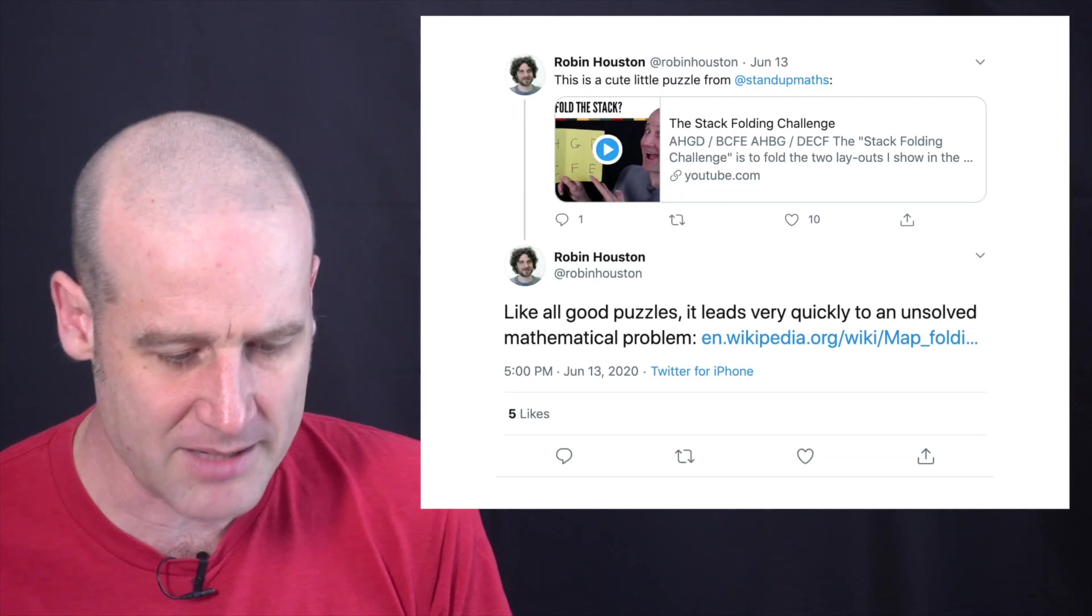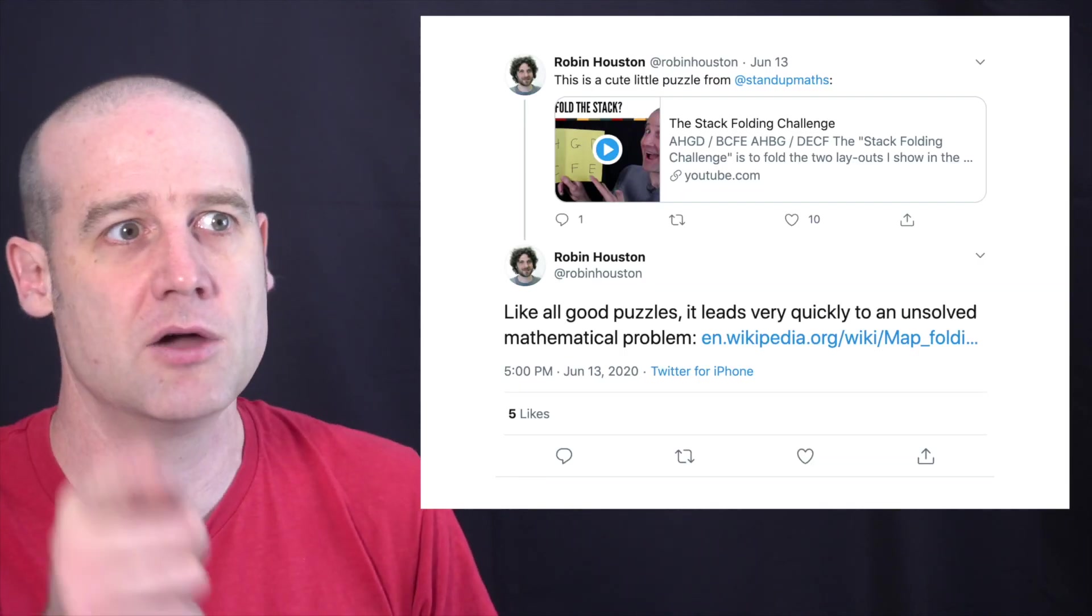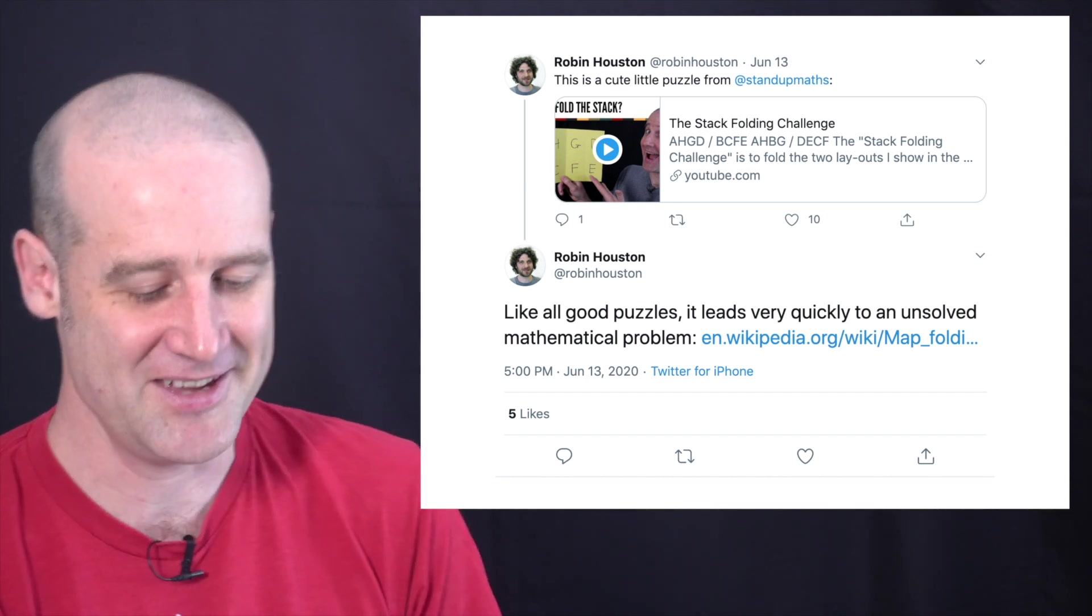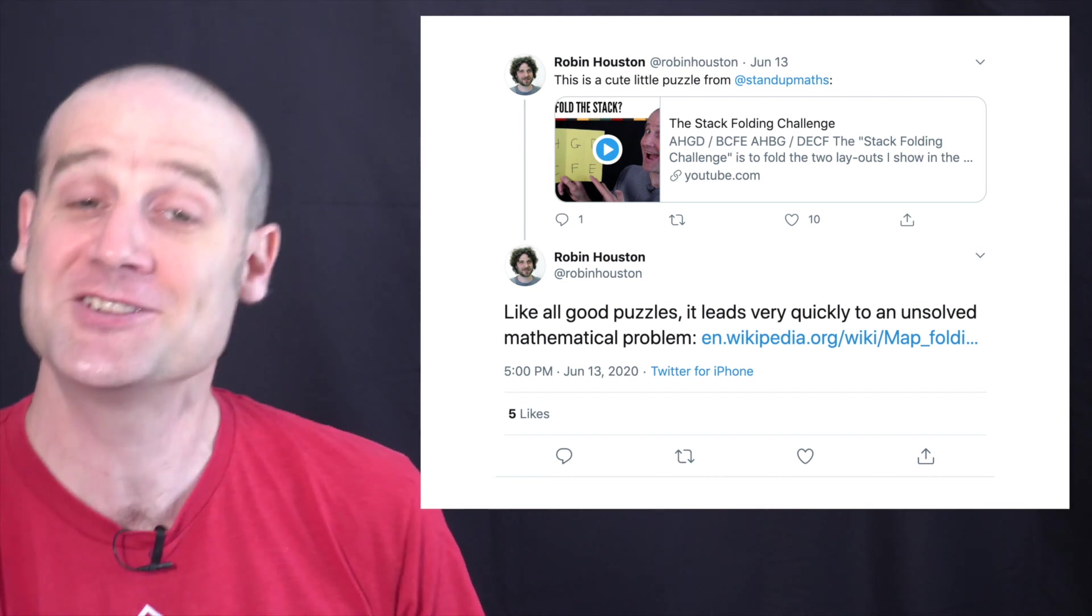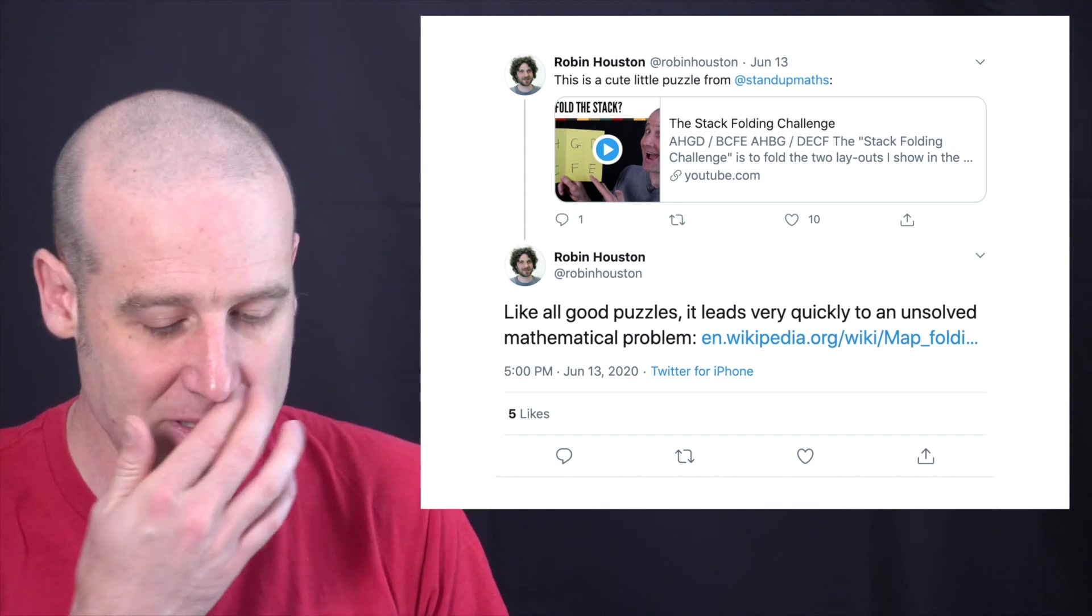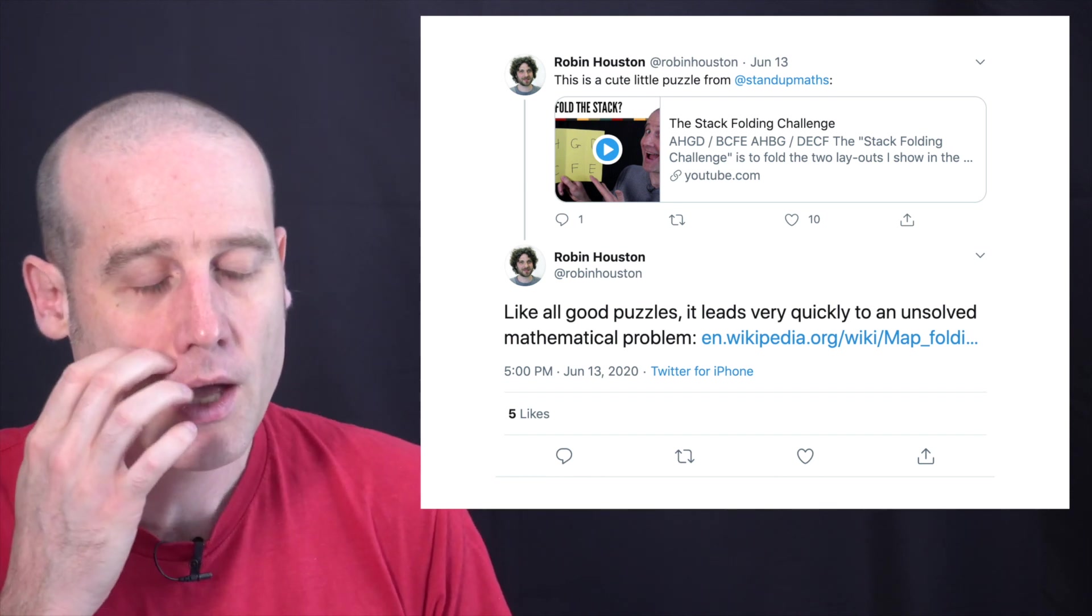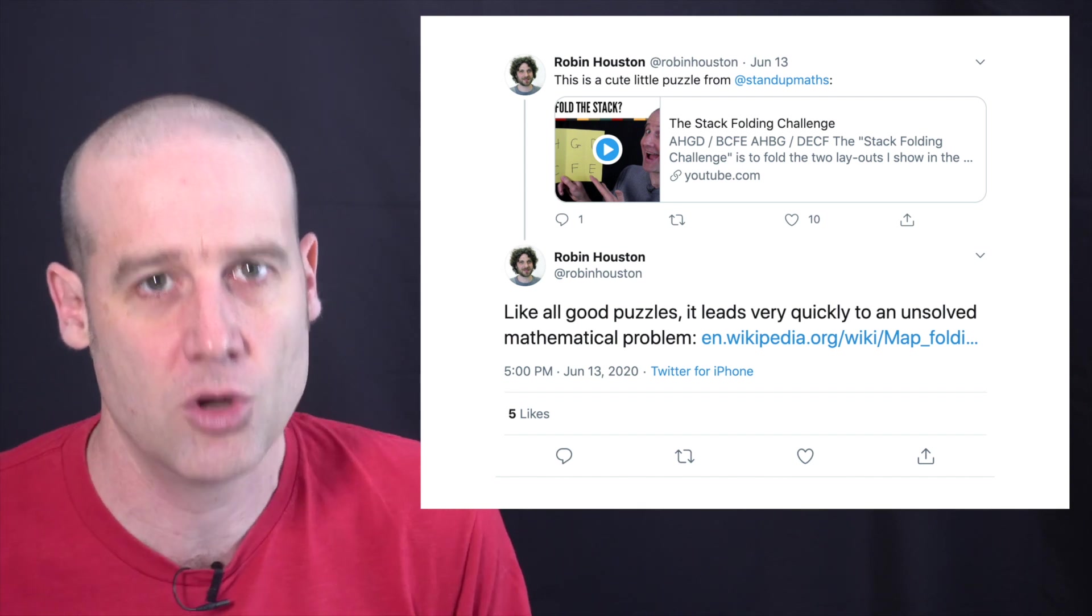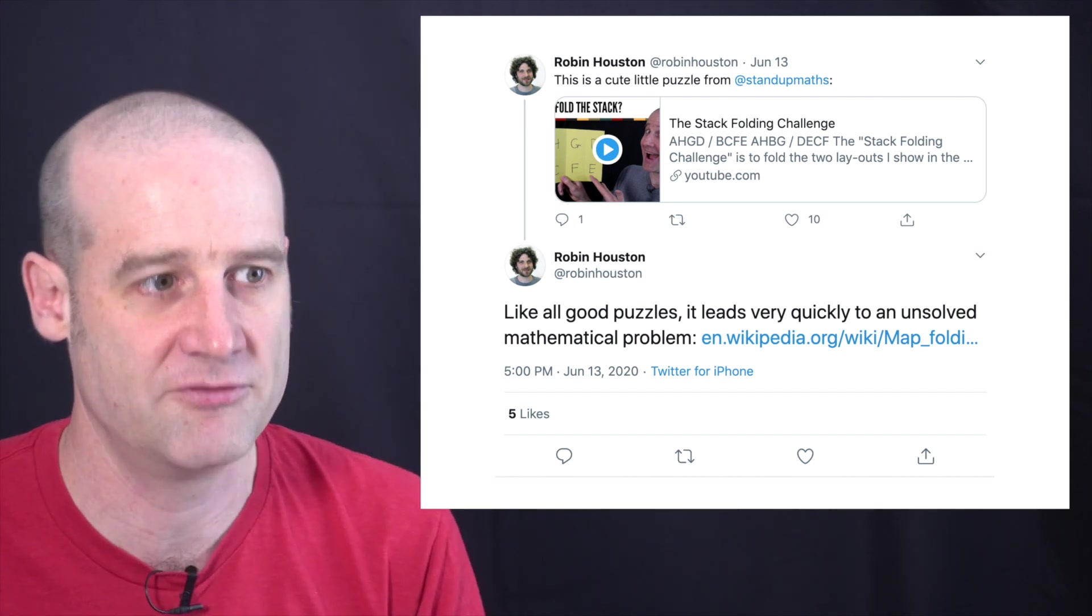And on Twitter Lateminer Robin tweeted about the puzzle. Very nice. Thank you, Robin. Oh, Robin you may know if you've watched my videos about super permutations. So that's why they may seem familiar. There you go. They then pointed out like all good puzzles it leads very quickly to an unsolved mathematical problem. They also then talked a bit about the history of this problem. So actually this folding paper problem first came up with a guy called Dudeney who made amazing puzzles back in the early 20th century. They first came up with some of these arrangements to try and fold it.